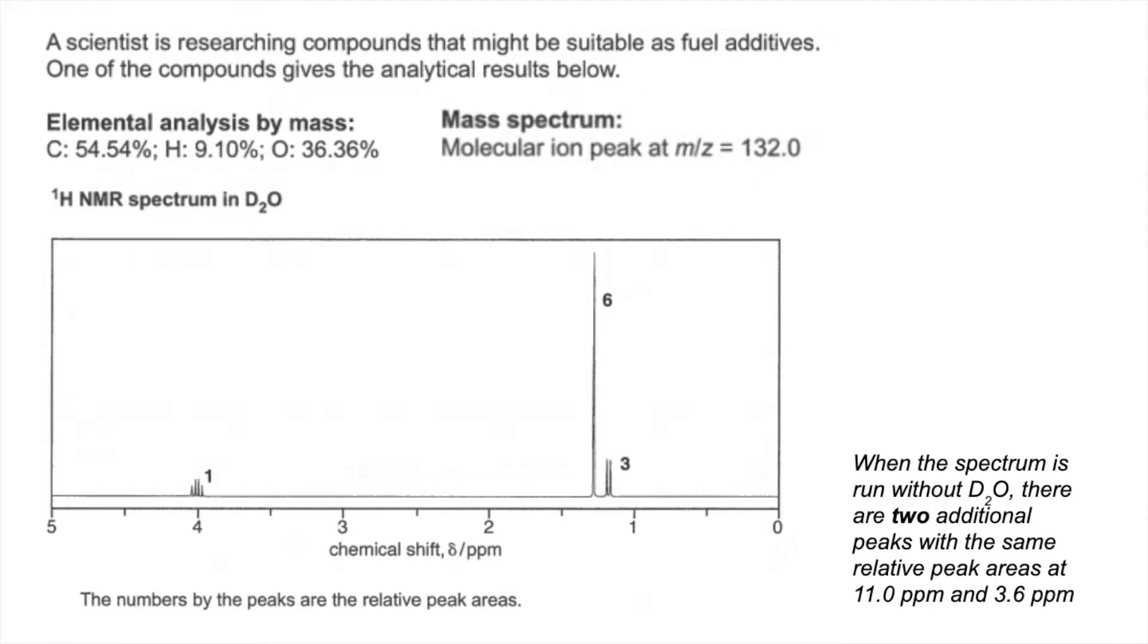We're told the numbers by the peaks are the relative peak areas and some information there at bottom right. When the spectrum is run without D2O there were two additional peaks with the same relative peak areas and they would have come up at 11.0 ppm and 3.6. So from all of that information we've got to come up with a suitable structure for this compound.